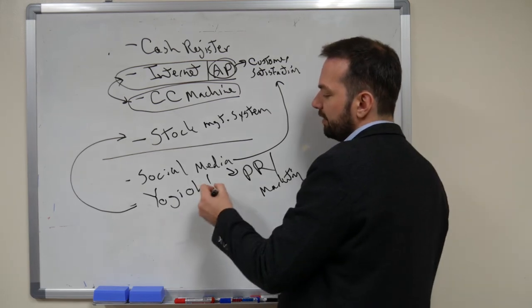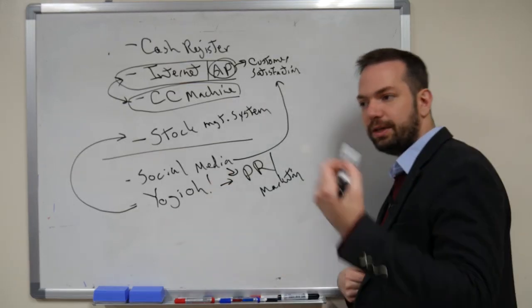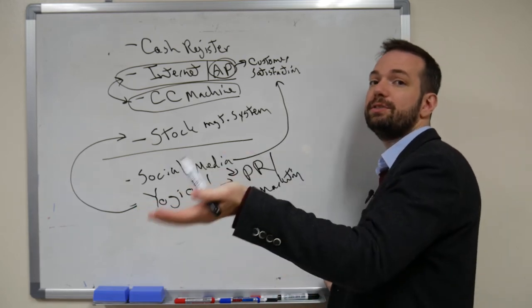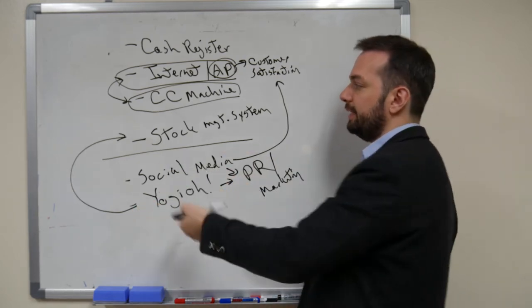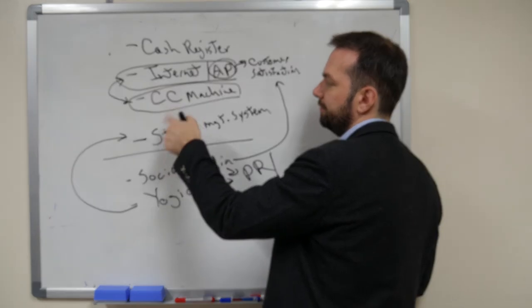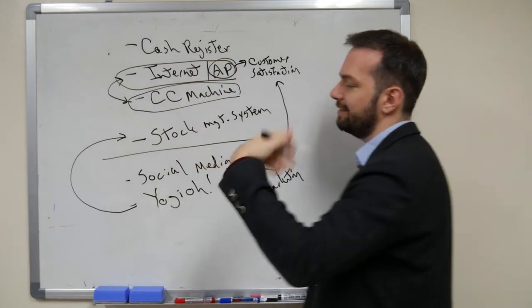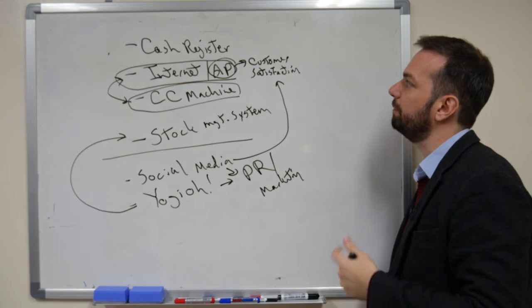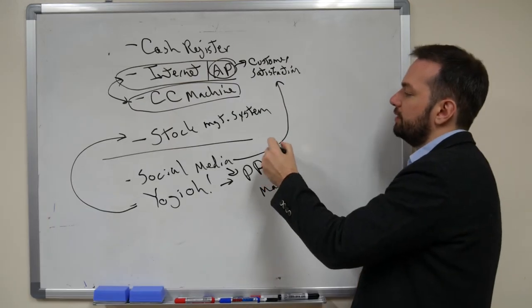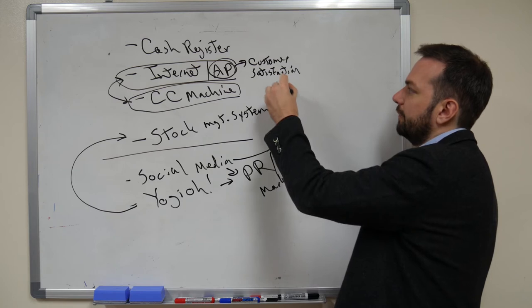Yogyo is also a little bit of PR and marketing because you get on their platform and then they say, hey, you're close to this restaurant. But it also helps with, not stock management, but sales, basically. Sales management. Customer satisfaction is also related to PR and marketing.